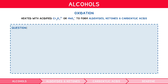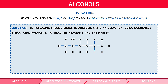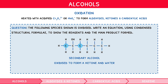Let's tie this all together with a question. The following species shown is oxidised — write an equation using condensed structural formulae to show the reagents and main products formed. First, identify the classification of the alcohol. Since the carbon to which the hydroxyl group is bound is bound to two other carbons, this is a secondary alcohol, specifically hexan-2-ol. Since a secondary alcohol is oxidised to form a ketone plus water in the presence of acidified potassium dichromate, we can write the following equation. Don't forget to write the conditions — heat and Cr2O7²⁻/H⁺ above the arrow.